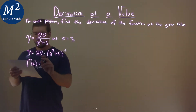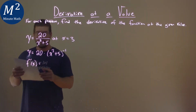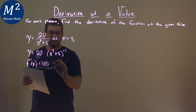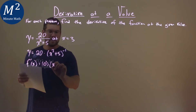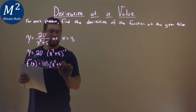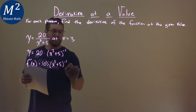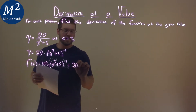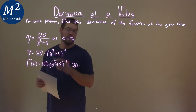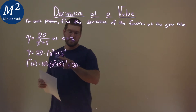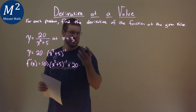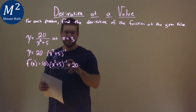...the derivative of the first value, the 20, which is 0, times the second, x squared plus 5 to the negative 1 power, plus 20 times the derivative of the second part, which we're going to find using the chain rule.